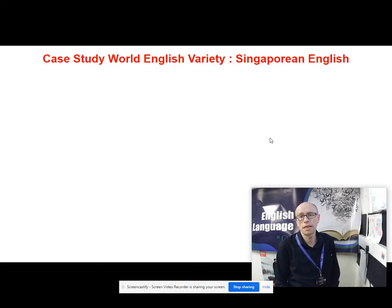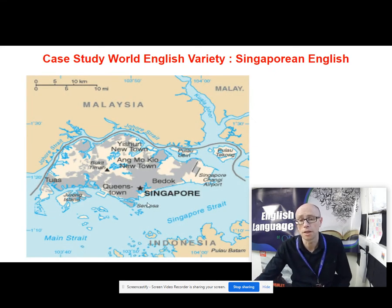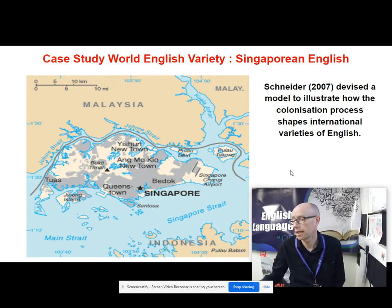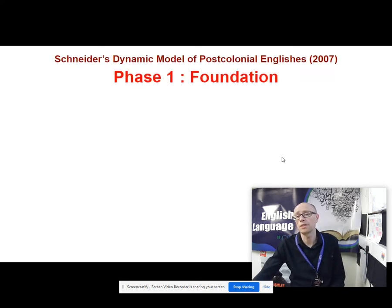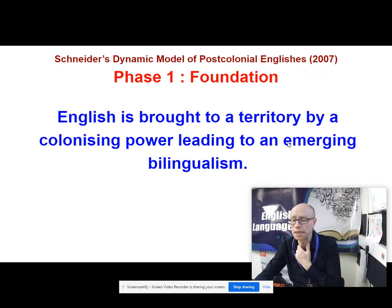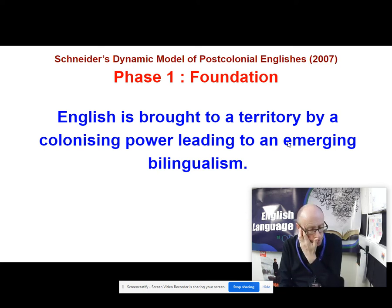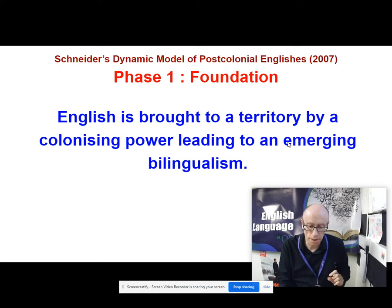Let's now focus on a particular case study. We're going to take you to the Far East, to Singapore — an interesting variety of English. We're going to do it in conjunction with another model devised by somebody called Schneider, who devised a model to illustrate how colonisation processes shape international varieties of English. He claims there are five processes. Phase one is the foundation — English is brought to a territory by a colonising power, leading to emerging bilingualism. Colonial expansion and trade results in the initial spread of English, and in the early stages bilingualism is slow to spread, with some lexical borrowings to aid simple communication.